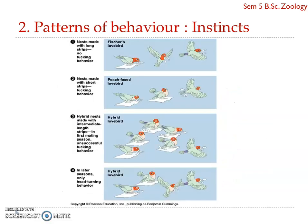Another example comes from the bird community — nesting behavior in lovebirds. Instinctive behavior is species-specific, as we have seen. The first species is Fischer's lovebird: they use their bill to transport nesting material. The nest is made with long strips collected and transported entirely by beak. In contrast, the African peach-faced lovebird collects material with the beak but while transporting, tucks it beneath the feathers to carry it to the nesting site.